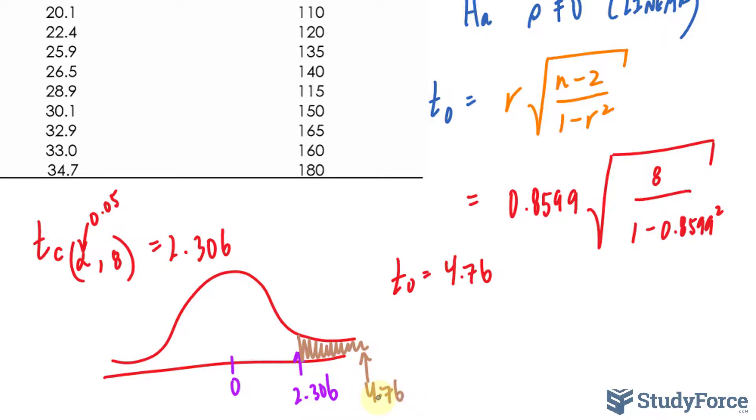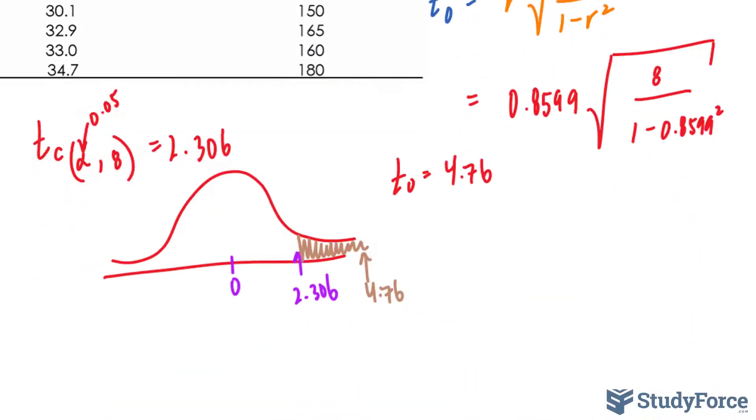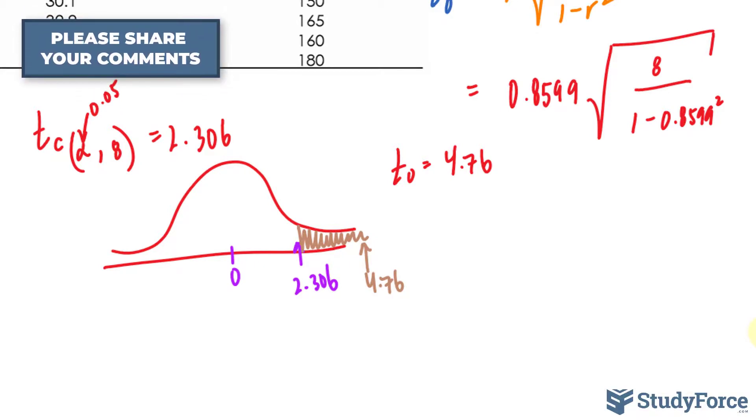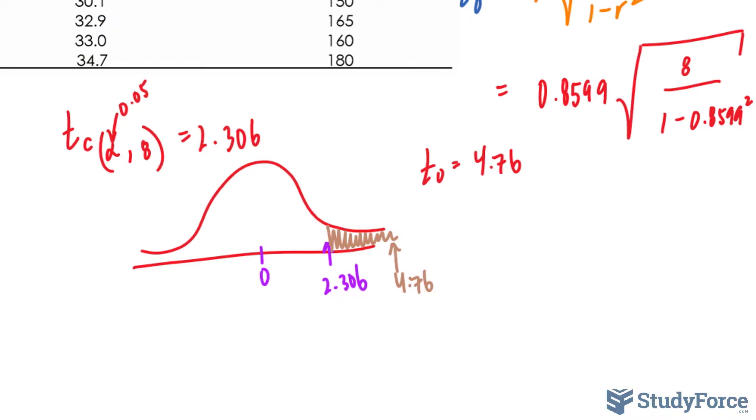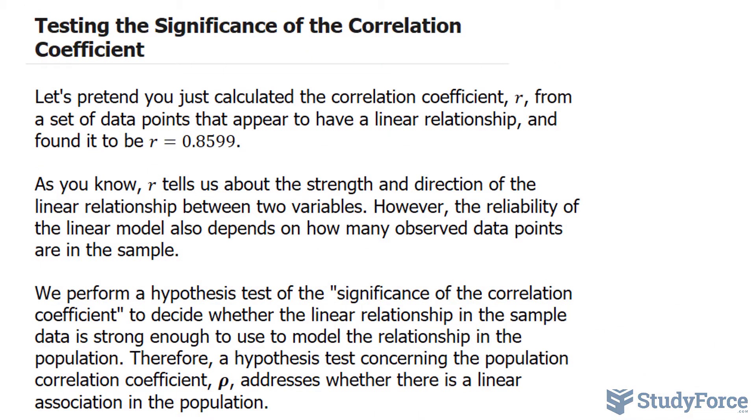Rejection region meaning that we will be rejecting the null hypothesis in favor of the alternative, because we have enough evidence at 0.05 to favor the alternative, which says that rho does not equal 0. So to say that again, we have sufficient evidence at 0.05 significance level to conclude a linear relationship between the two variables, namely body mass index and systolic blood pressure for the entire population. And there you have it.